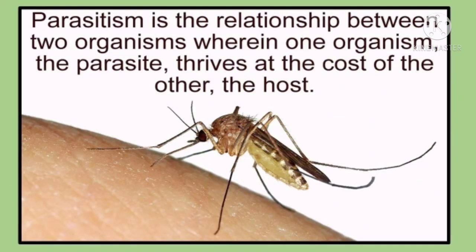And last but not the least, we have parasitism. Parasitism is the relationship between two organisms wherein one organism, the parasite, thrives at the cost of the other, the host. Kung kanina sa predation meron tayong predator and prey, ngayon naman dito sa parasitism, ang tawag natin sa mga organisms na involved ay parasite and host. The organisms involved are labeled as the host — the one being harmed — and the parasite — the one that causes harm.